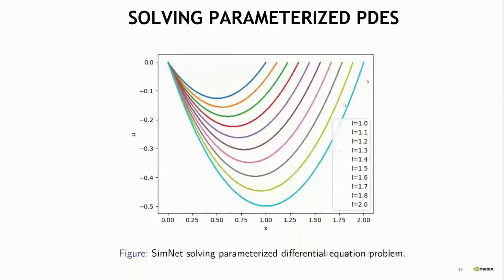Here's the solution. For different values of L, you can see different lines corresponding to solutions for different values. And you can imagine how this would be useful in parametric optimization, for example.